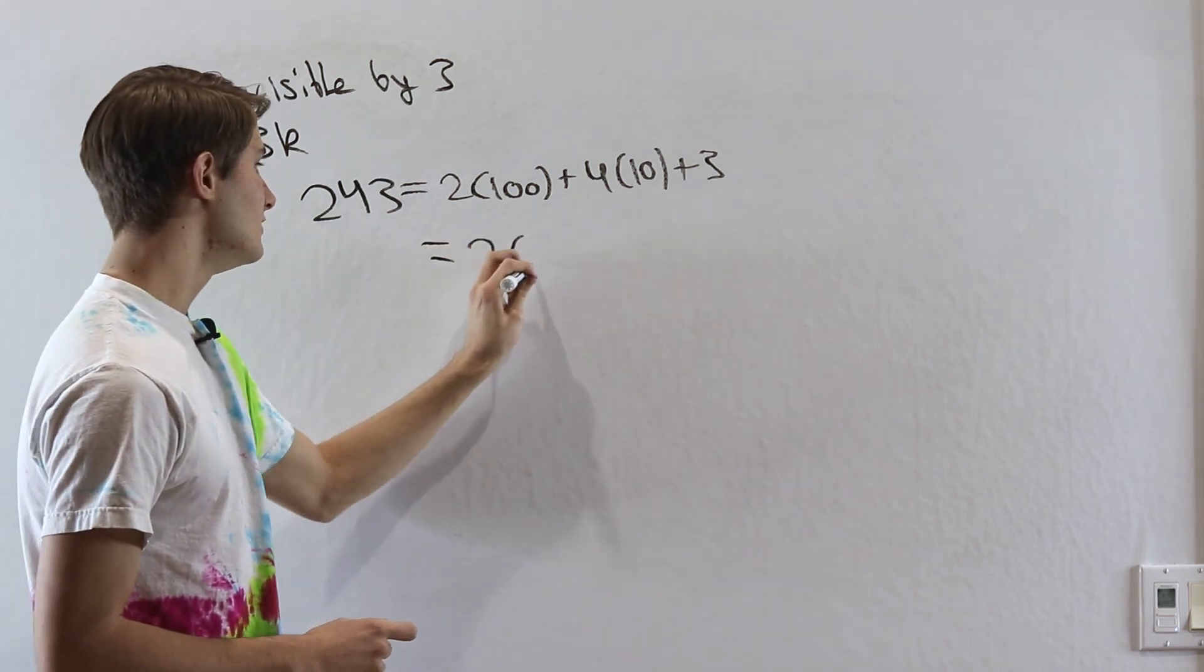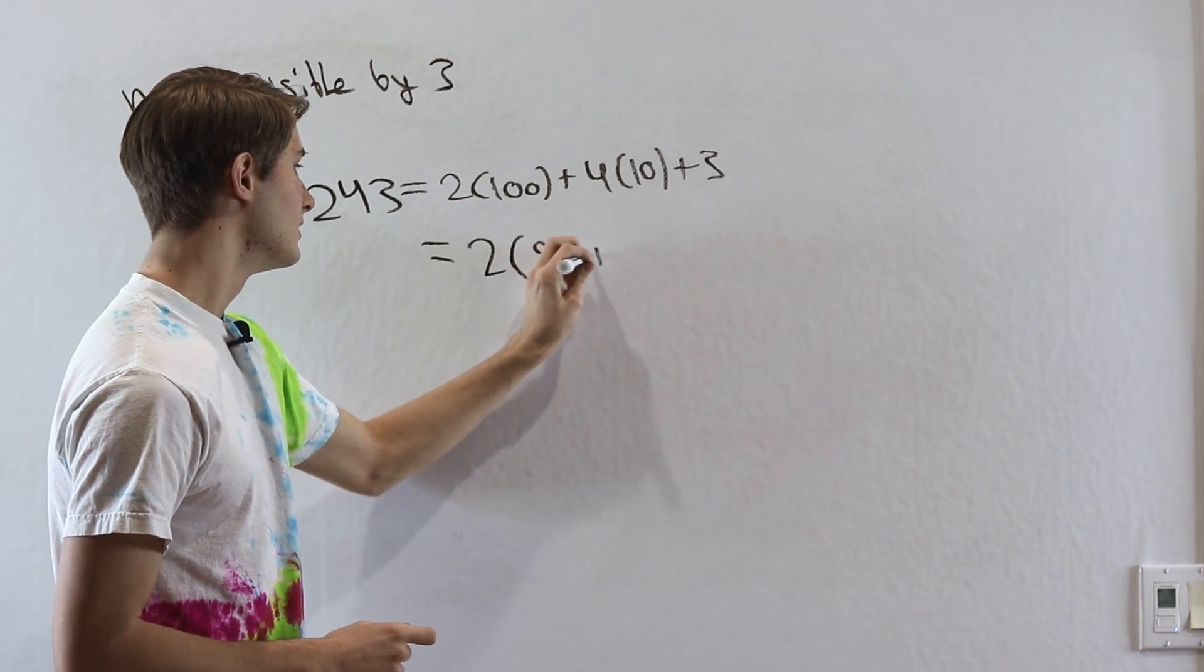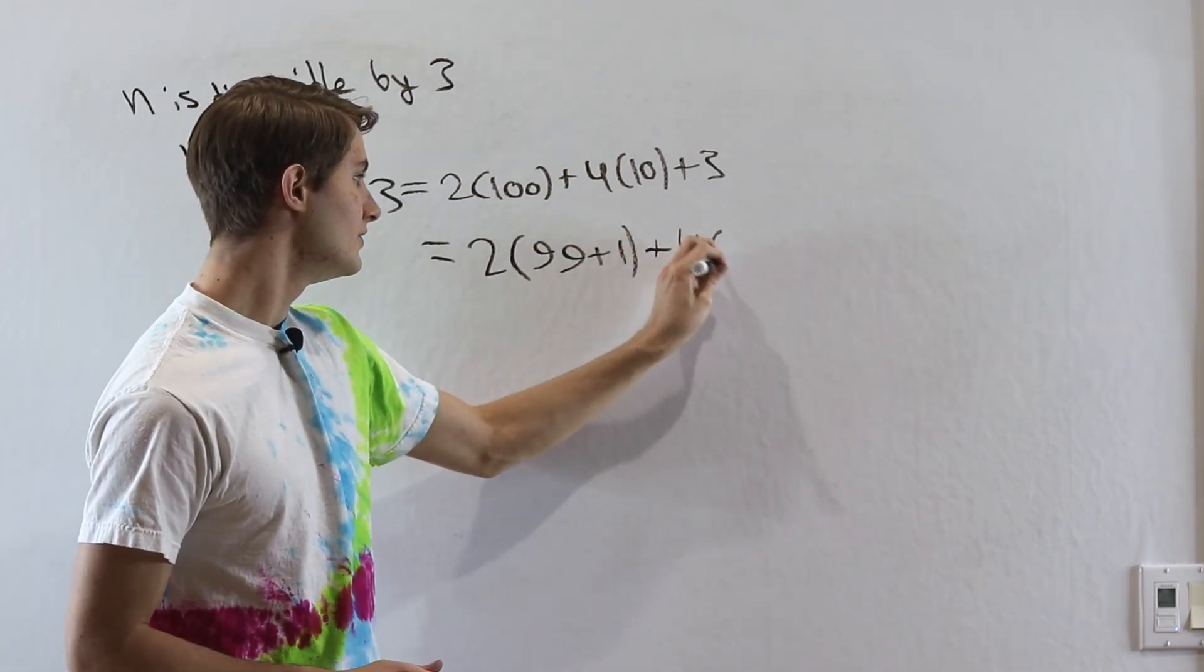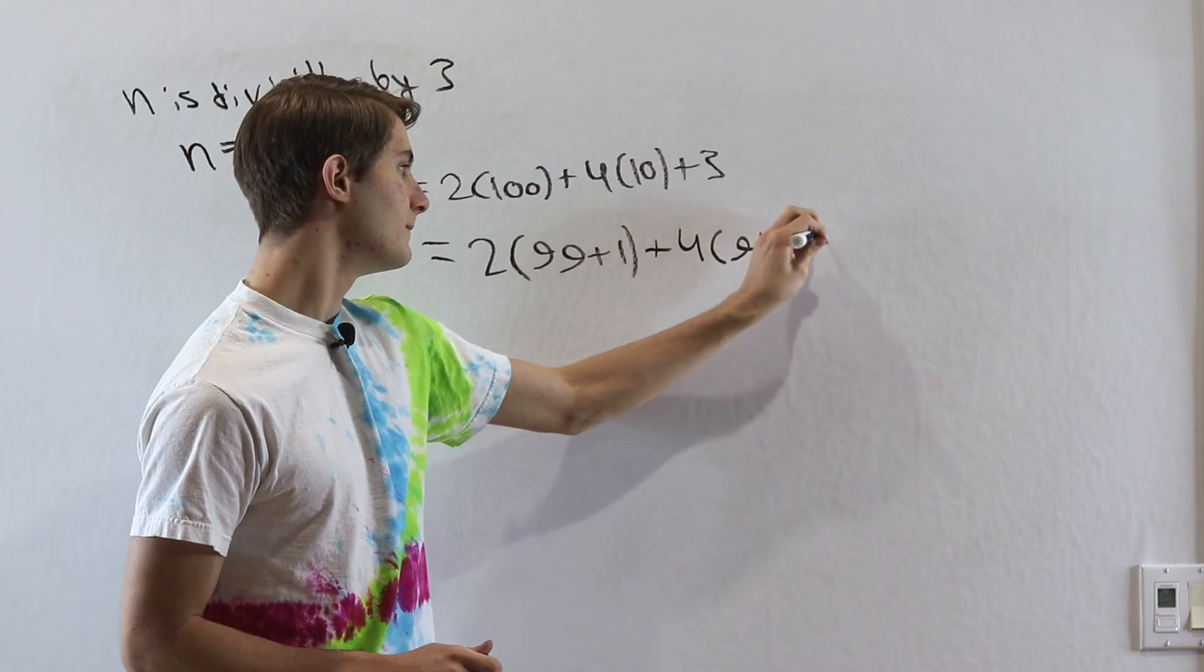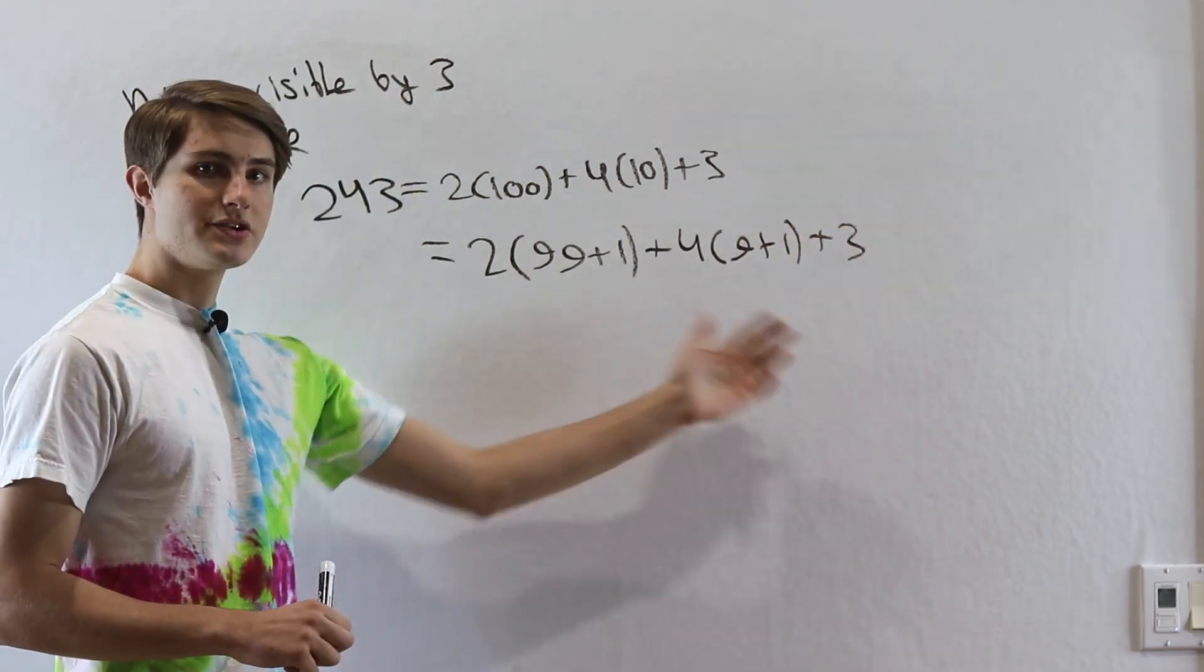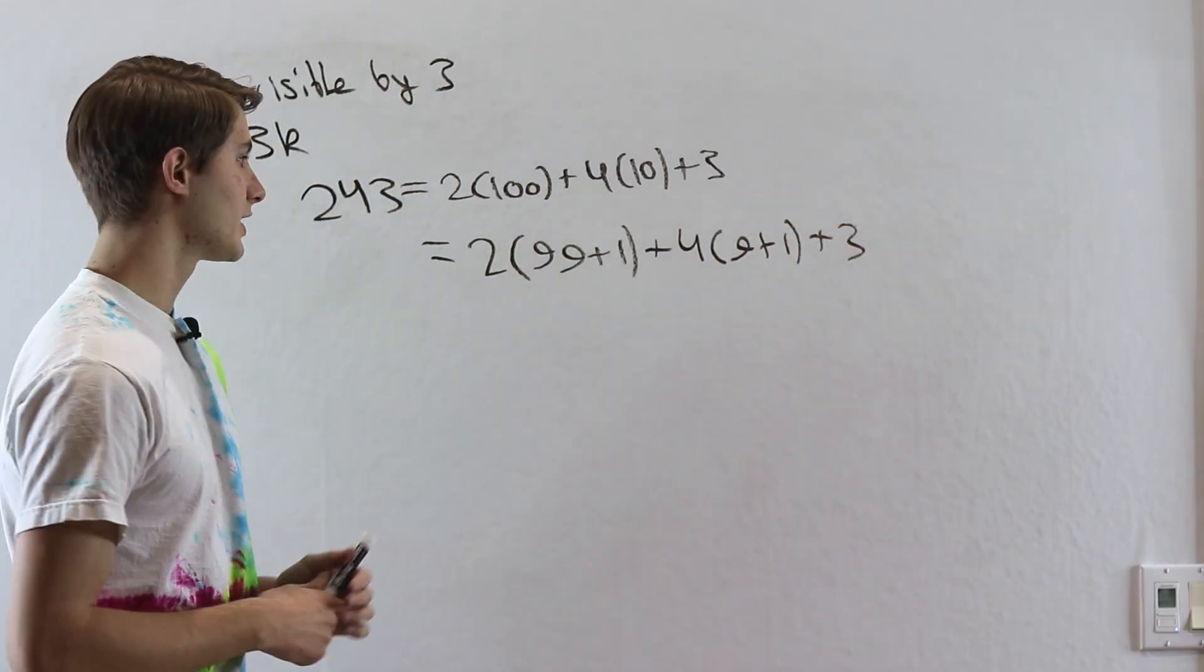If we look at each of these parts in parentheses, we know that 100 is equal to 99 plus 1, that 10 is equal to 9 plus 1. Now let's expand this out a little bit and see exactly what we have.